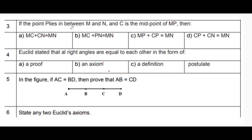If a point P lies between M and N, and C is the midpoint of MP, let's mark the points M and N, with P between them and C as the midpoint of MP. The first option is MC plus CN equals MN. MC from here plus CN equals MN — yes, that's true.